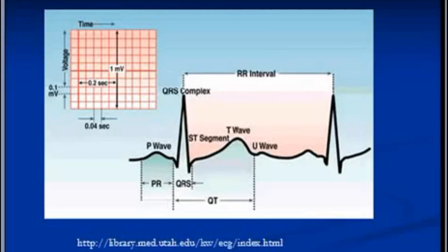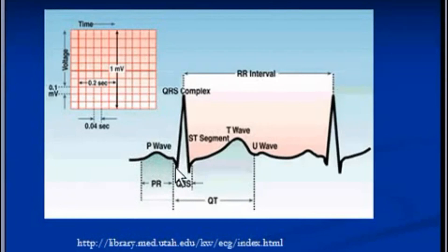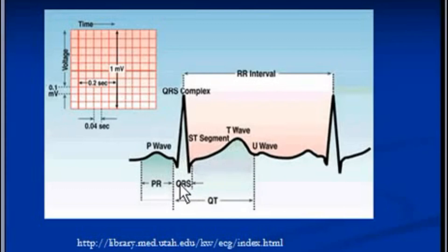The sketch is a representation of components of a typical ECG trace. Just to make it simple: this is P wave, this is Q, this is R, and this is S. This is the T segment, and this is T wave. This is the Q, R, and S complex.